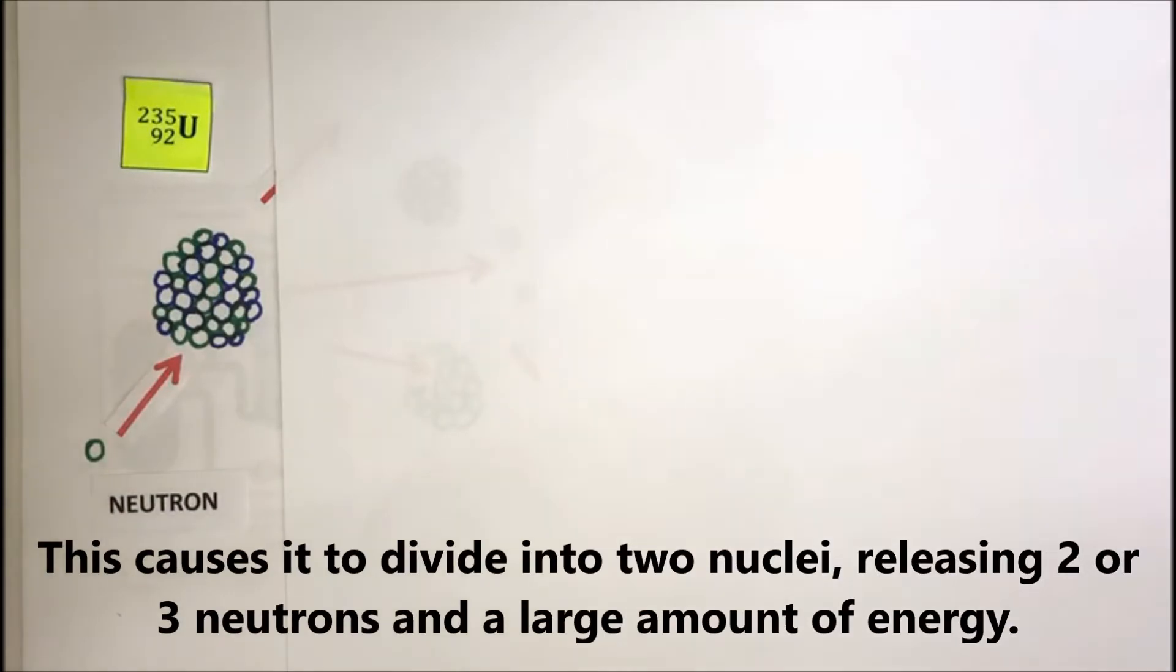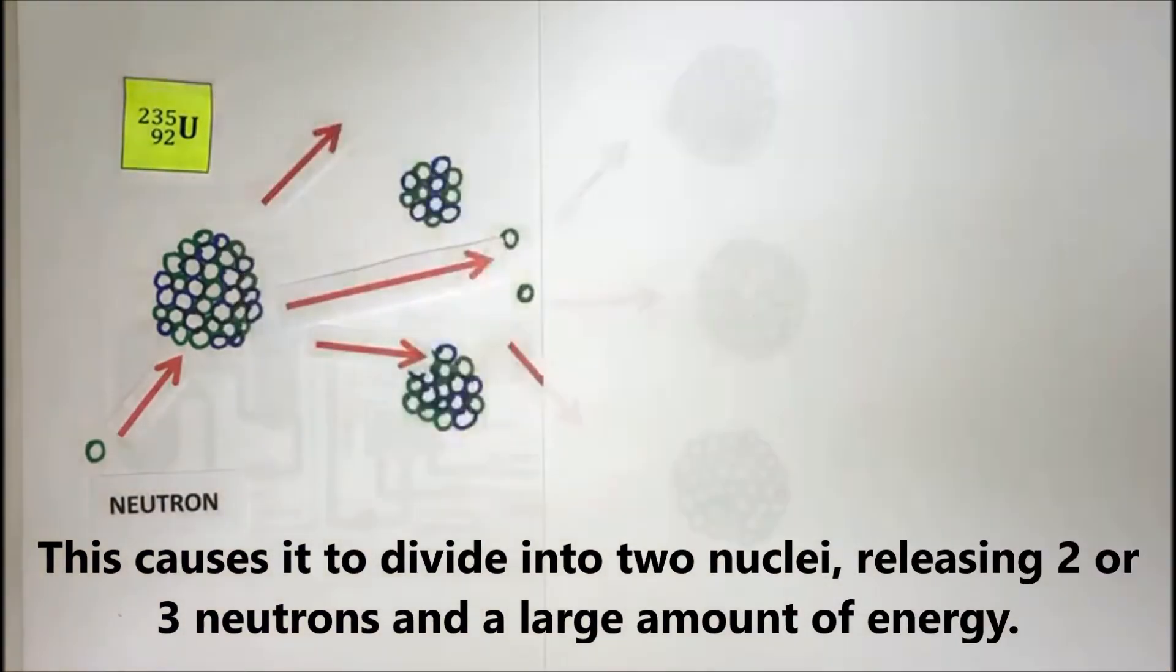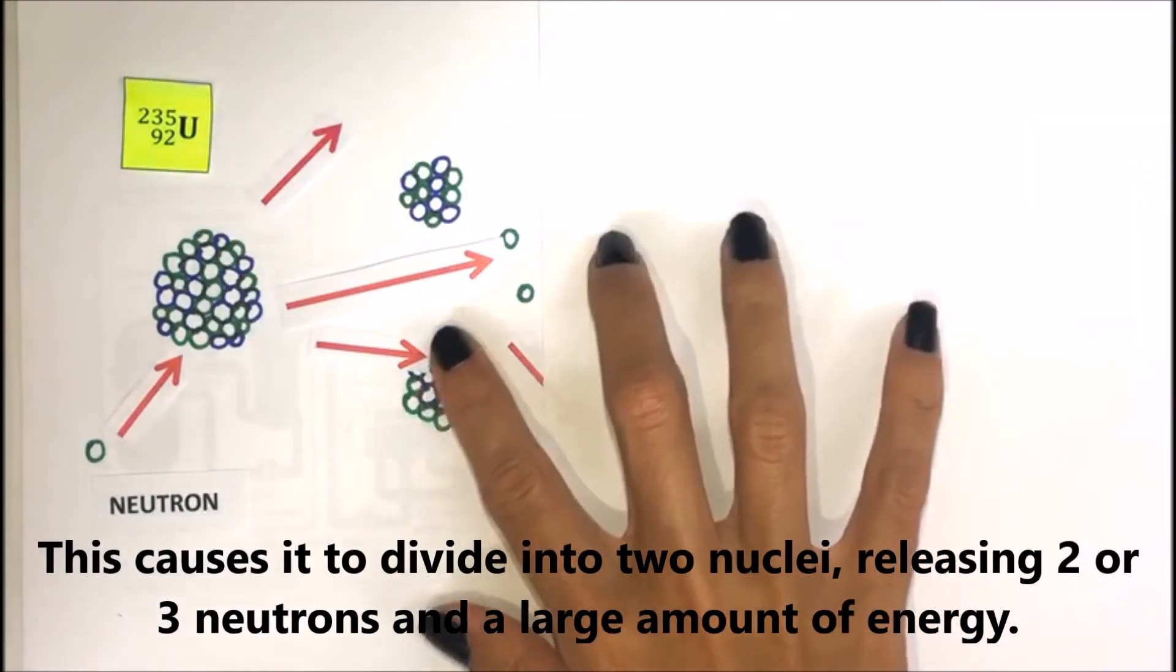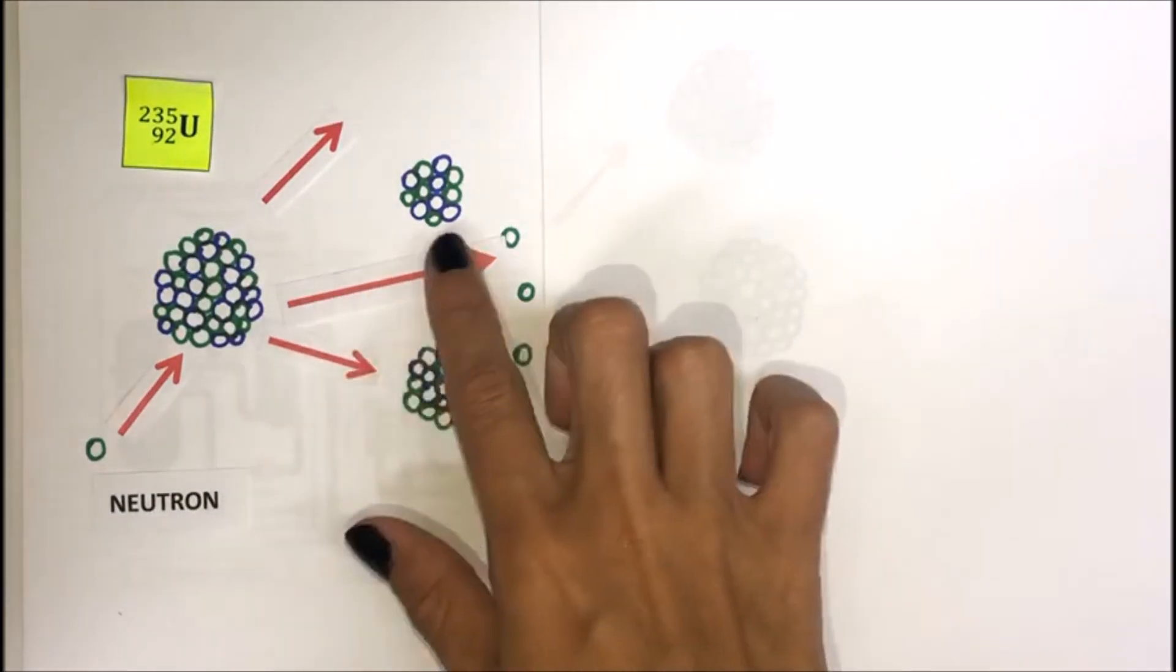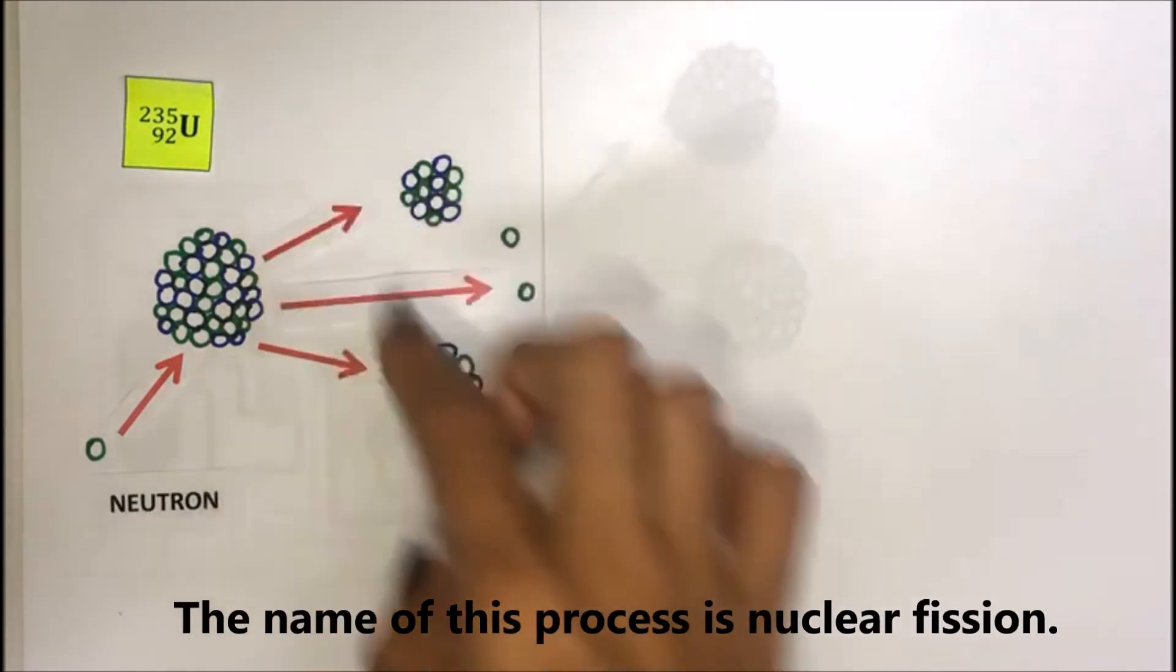This causes it to divide into two nuclei, releasing two or three neutrons and a large amount of energy. The name of this process is nuclear fission.